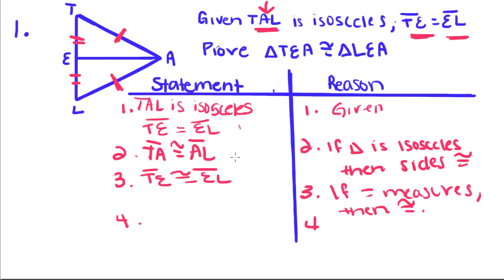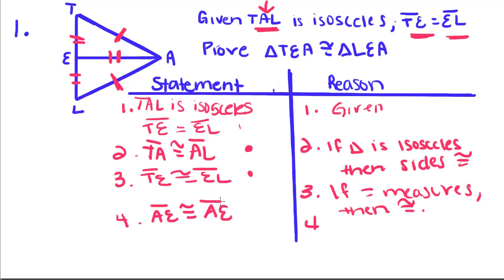Now we have one side and another side. All we need is a third side. If you look, these two triangles share AE. Since AE is always going to be congruent to AE, we have a third pair of congruent sides. This is the reflexive property.